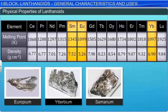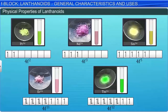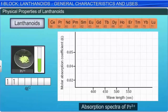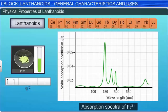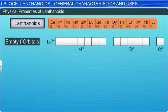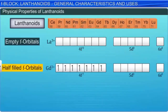Many of the trivalent lanthanoid ions are colored, both in their crystalline state and in aqueous solutions. The color of these ions is directly related to the number of unpaired electrons in the 4F subshell. The absorption spectra of compounds of trivalent lanthanoid ions show a very sharp line band in the UV, visible, or near infrared region. These bands are due to internal electron transitions in the partly filled 4F shell and are called F-to-F transitions. Lanthanoid ions that have empty F orbitals like trivalent lanthanum, half-filled F orbitals like trivalent gadolinium, or completely filled 4F orbitals like trivalent lutetium are colorless.